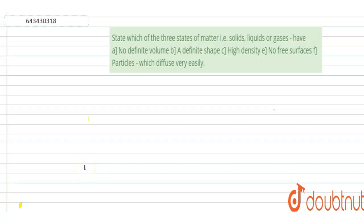Hello everyone. So now we have this question. This question basically says that state which of the three states of matter, solid, liquid or gases have: no definite volume, a definite shape, high density, no free space and particles which diffuse very easily.